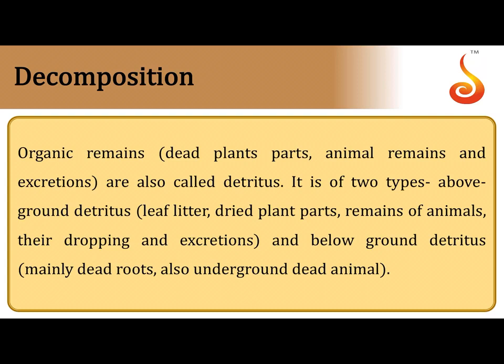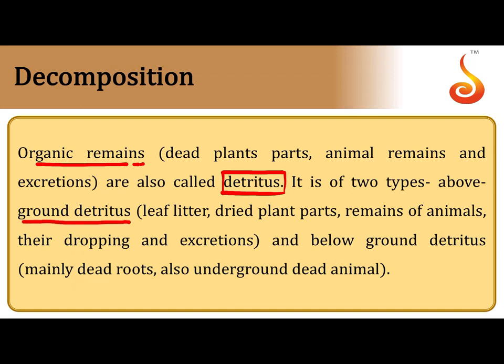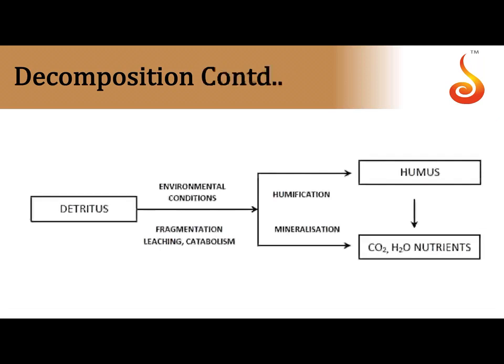Decomposition is a degradation process carried out by microorganisms. The organic remains on the forest floor — dead plant parts, flowers, fruits, twigs, animal carcasses, fecal matter — are called detritus. There are two types: above-ground detritus and below-ground detritus. Fragmentation is carried out by detritus feeders like earthworms, which break larger material into smaller particles.